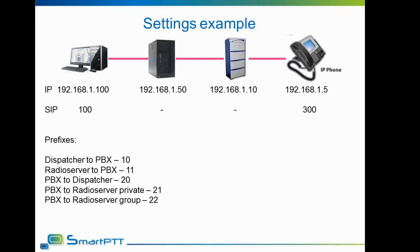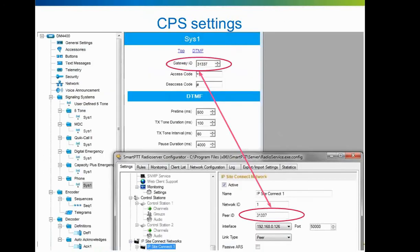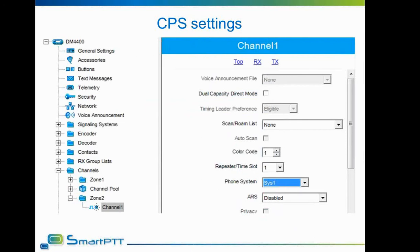The process of setting up the system is complex — let's proceed step by step. First, let's look at CPS settings. CPS settings are needed only in case of IP Site Connect; for control stations or Capacity Plus systems, this is not needed. For IP Site Connect and CPS of every subscriber radio, it is obligatory to set up the phone system under signaling system options. The Gateway ID should match the peer ID of the radio server for this IP Site Connect system. Access and deaccess codes must be set for correct functioning — in this case, asterisk-1 and pound are used. The second critical setting is selecting usage of the phone system for each channel, as each channel has individual settings, allowing users to select different phone systems for different sites or IP Site Connect systems. That's all that needs to be set up in CPS.